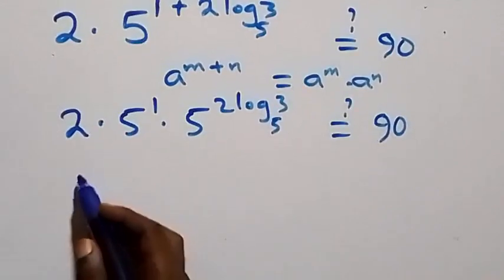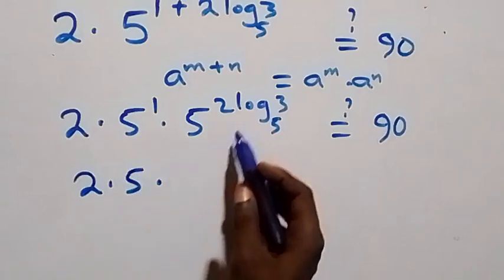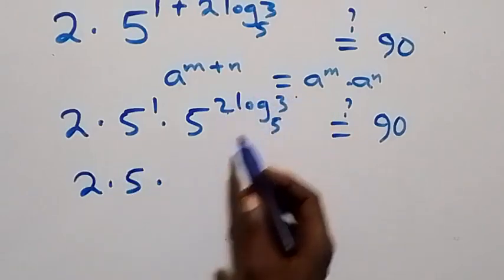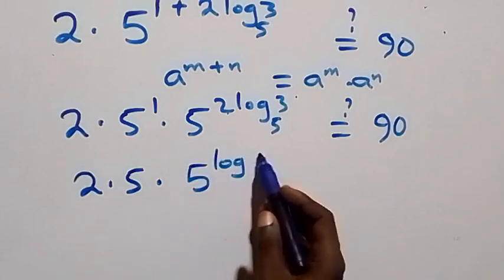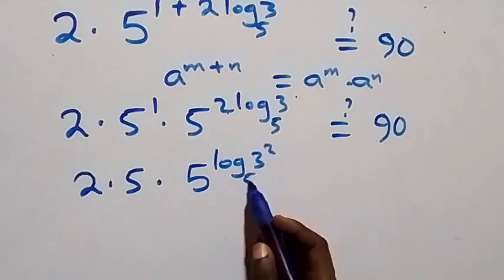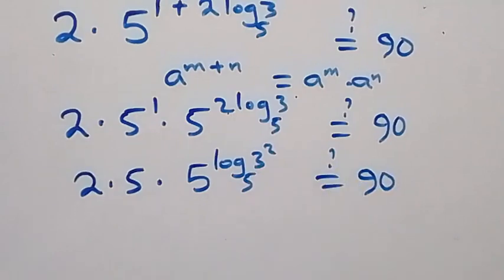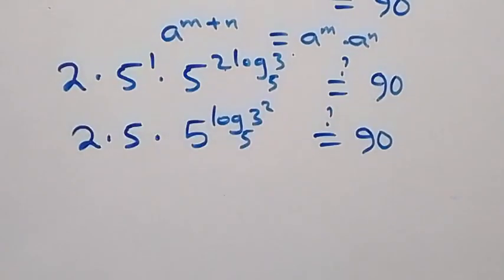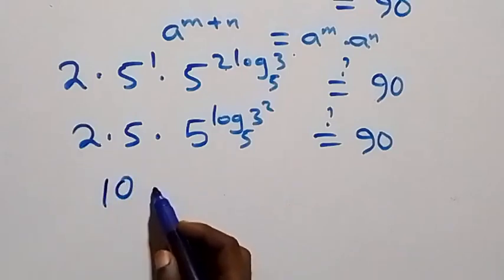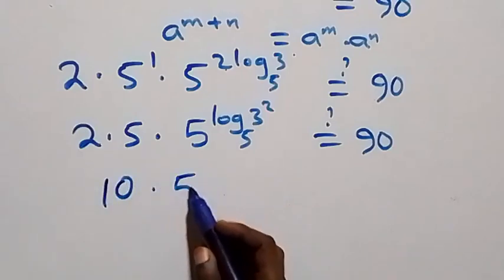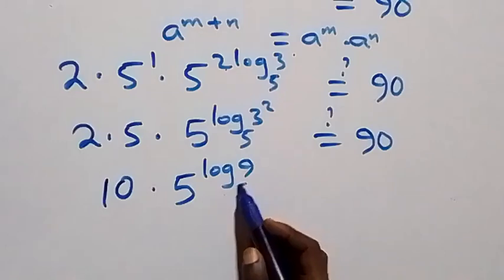At this step, we have 2 times 5 raised to power 1, which is 5. Then times, reversing from the power-log identity: 5 raised to power log₅(3 squared) equals 3 squared, which is 9. So this equals 2 times 5 times 9, which is 90 — equal to the right-hand side.